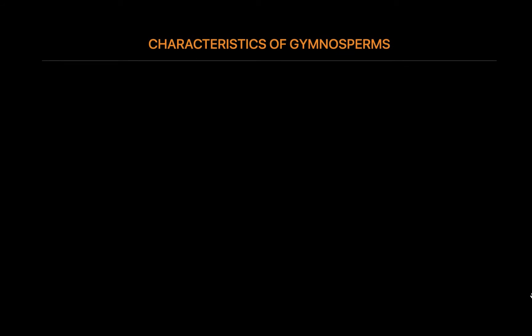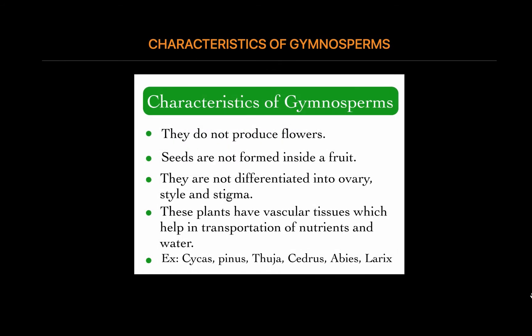Characteristics of gymnosperms: Gymnosperms are seed plants adapted to live on land. Thus, they are autotrophic, photosynthetic organisms that tend to conserve water. They have a vascular system for transportation of water and nutrients that includes roots, xylem, and phloem. Gymnosperms have needle-like or scale-like leaves and no flowers. The leaves have a waxy cuticle that reduces water loss and helps snow to slide off easily, reducing the weight load on branches. Most gymnosperms are evergreens, though a few species like the larch and tamarack are deciduous.